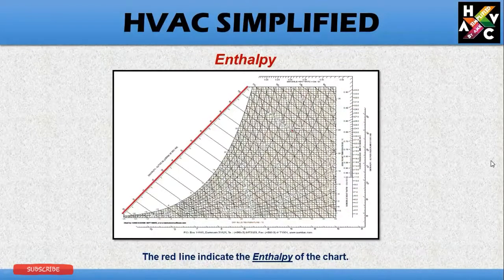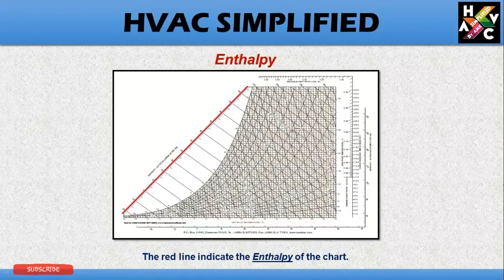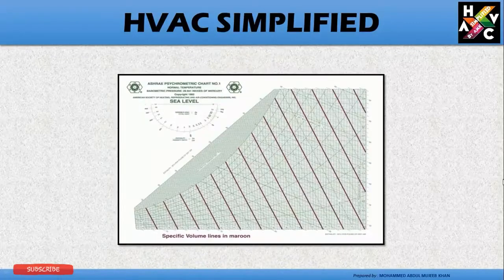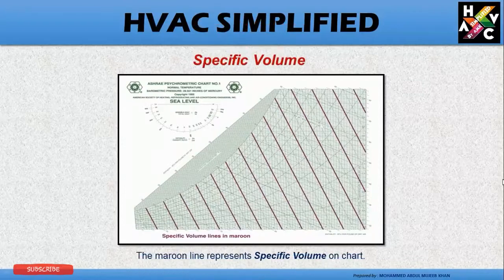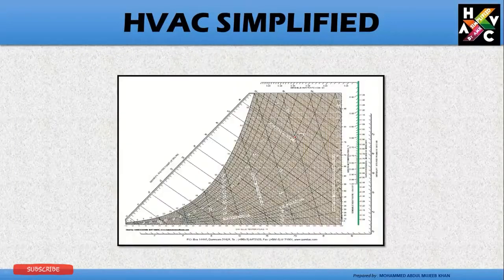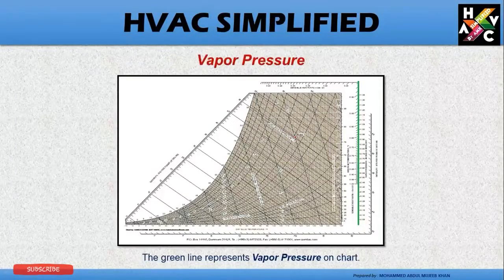The red line indicates the enthalpy on the enthalpy chart. The maroon line represents the specific volume. The green line represents the vapor pressure on the chart.